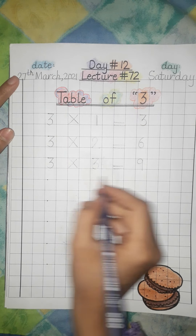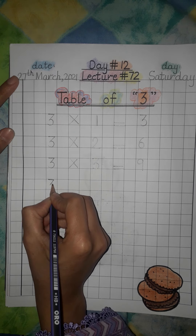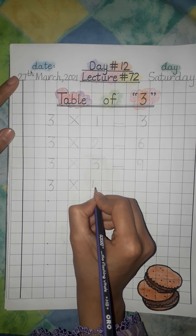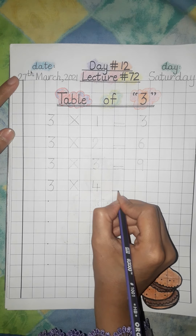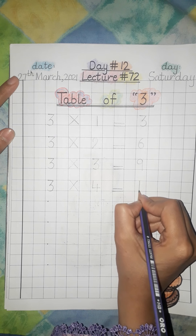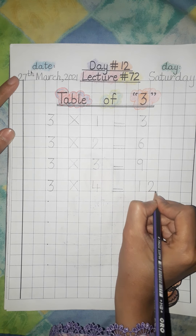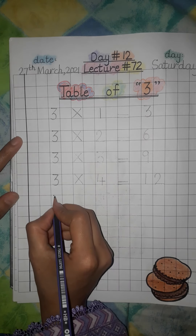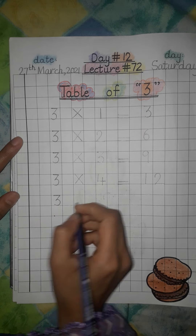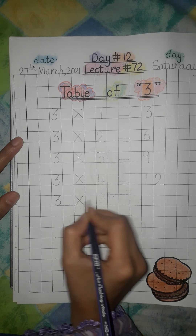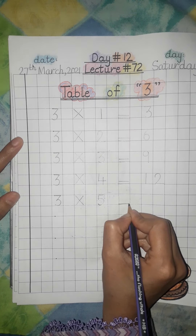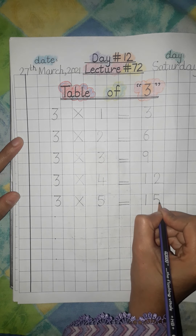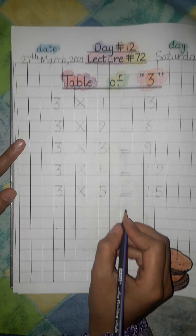Three threes are nine. Three multiply four is equal to twelve. Three fours are twelve. Three multiply five is equal to fifteen. Three fives are fifteen.